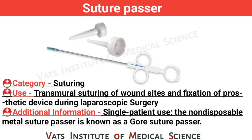Suture passer. Category: suturing. Use: transmural suturing of wound sites and fixation of prosthetic device during laparoscopic surgery. Additional information: single patient use. The non-disposable metal suture passer is known as gore suture passer.